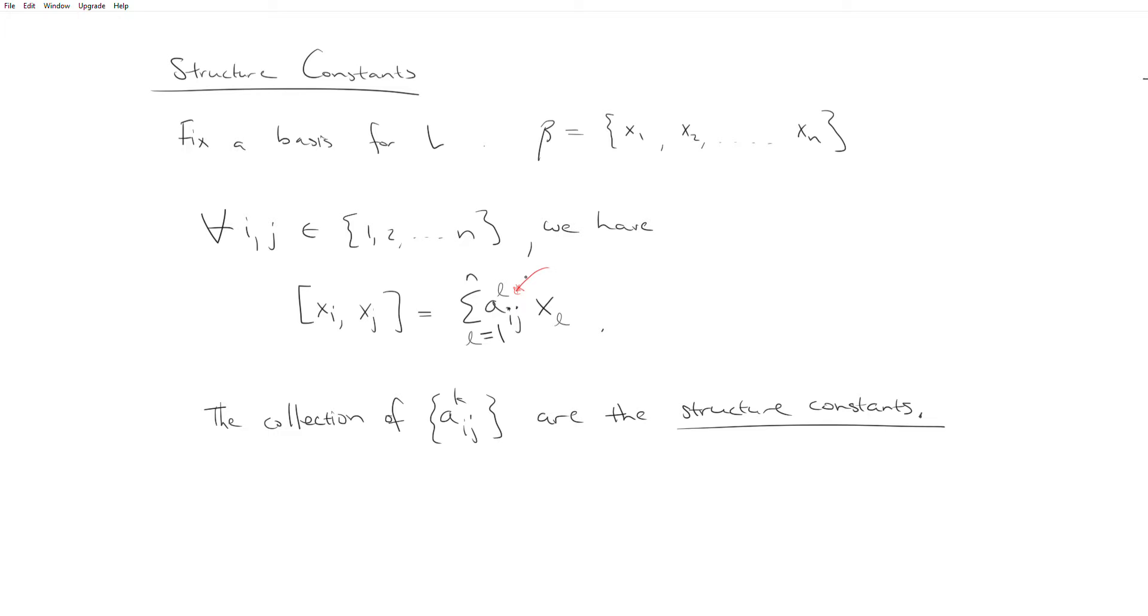However, it doesn't go the other way, which is a Lie algebra doesn't necessarily have one set of structure constants because this clearly depends on your choice of basis.